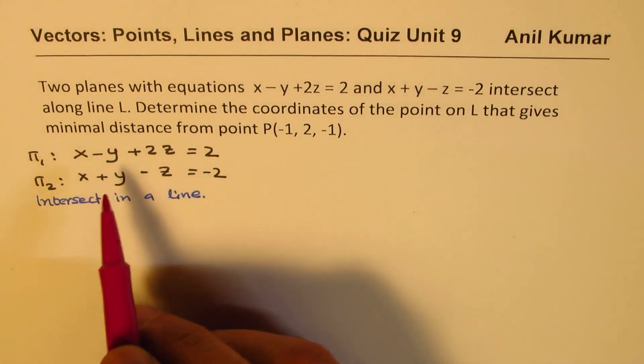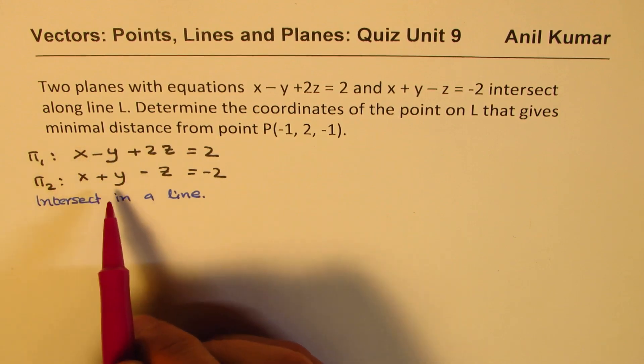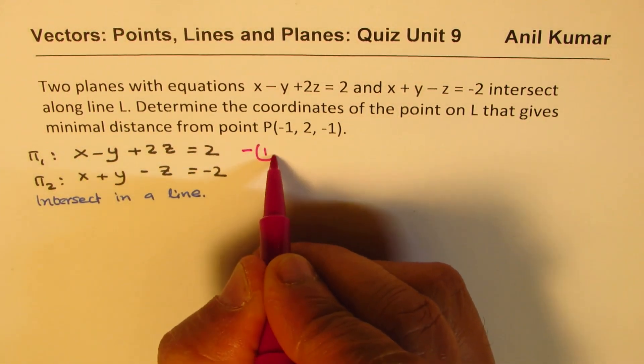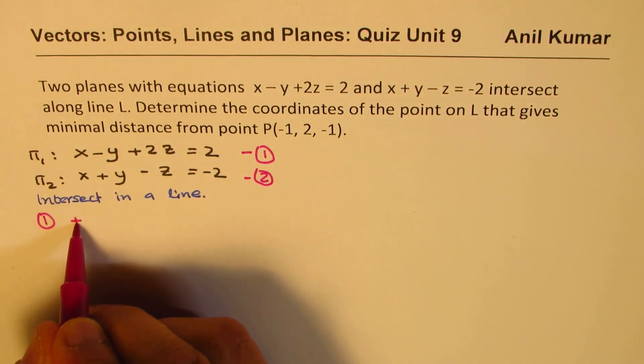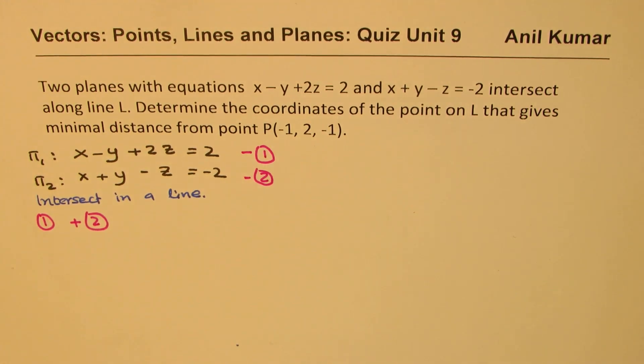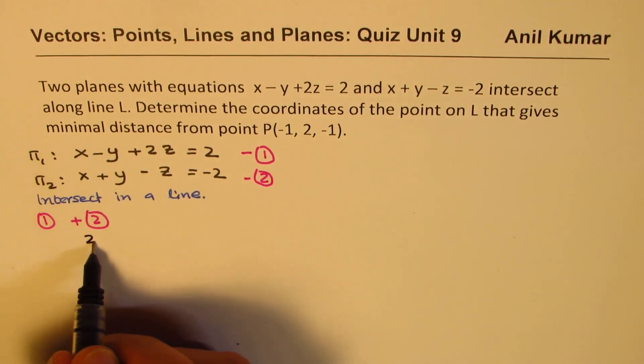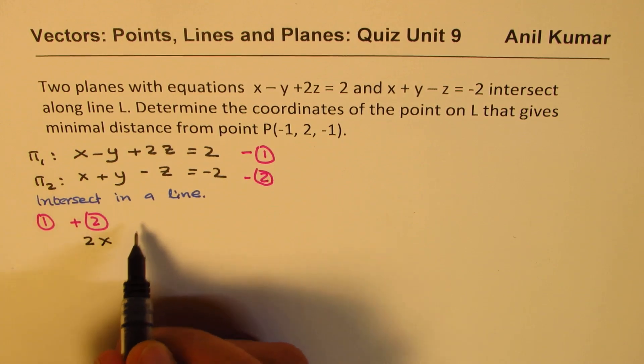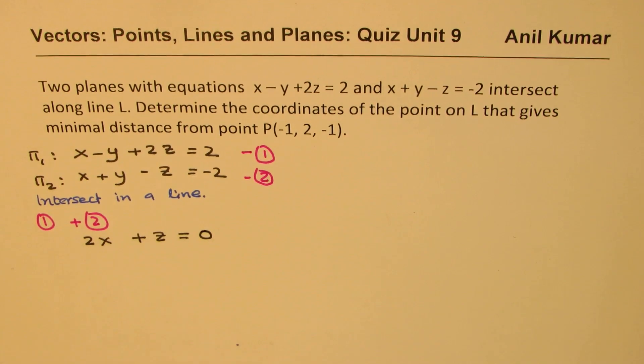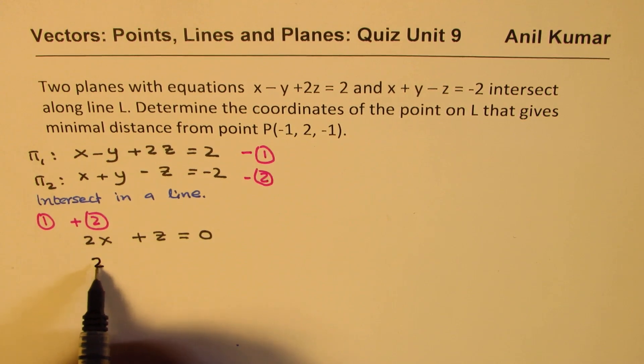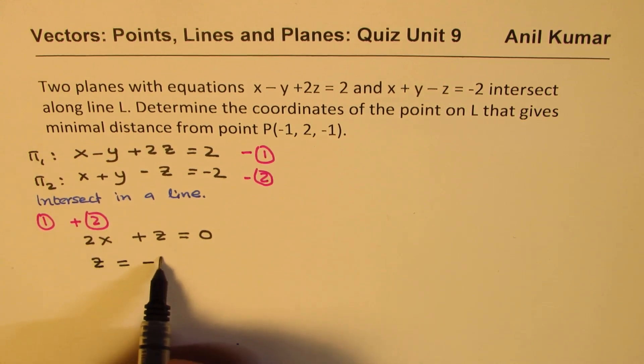So line means we have to introduce a parameter. Since there are two equations, we need a parameter. If I add these two lines, y's get cancelled. So equation 1 plus equation 2: we get 2x plus z equals 0. Now we need to define some parameters.